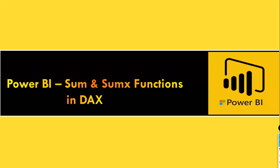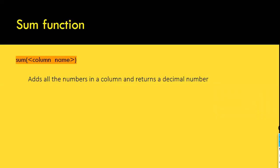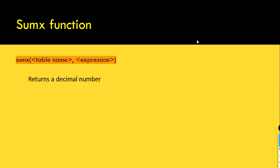Next we will explore the difference between the SUM and SUMX functions. The SUM function adds all the numbers in a column and returns a decimal number. The SUMX function, as I've explained before, is a row-iterating function — functions ending with X are called iterating functions. It takes two arguments: the first is a table name, the second is an expression. SUMX also returns a decimal number, but it can evaluate an expression.